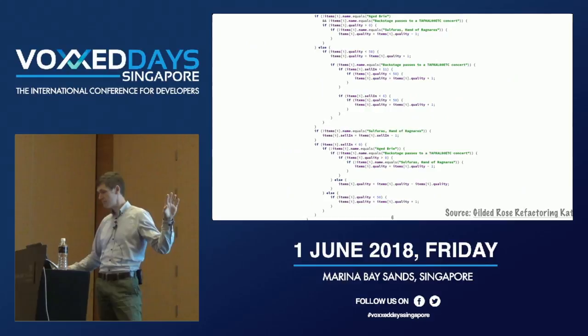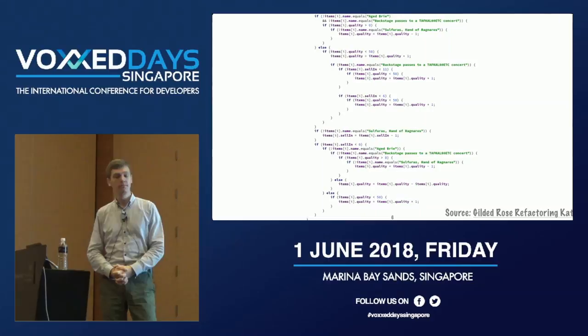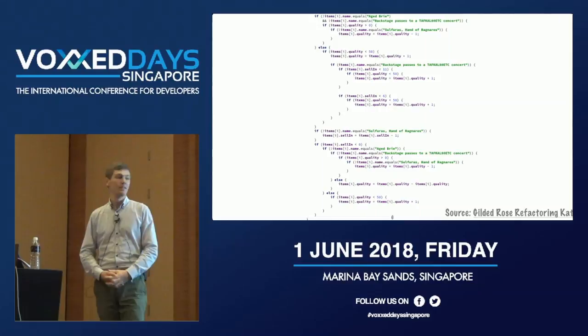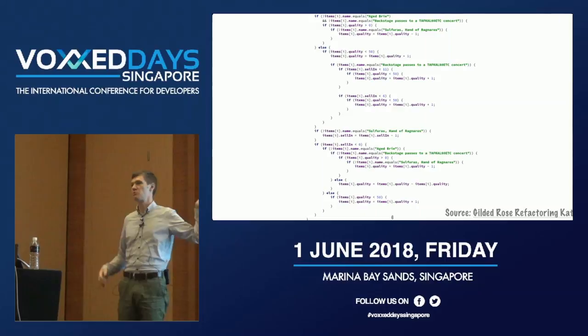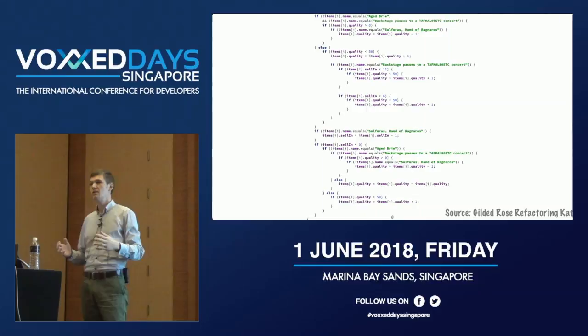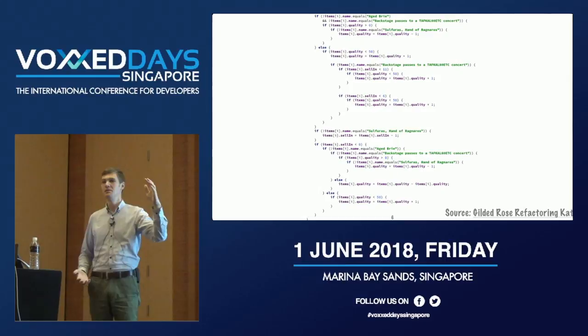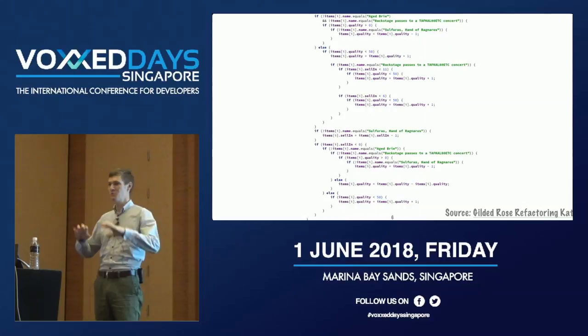What about this? I took this code from a repository — it's a refactoring kata called Gilded Rose. You take this code, try to refactor it. It's like you're deployed on a project, you open up your IDE, and you see a mess. Your objective is to make sense of the mess.